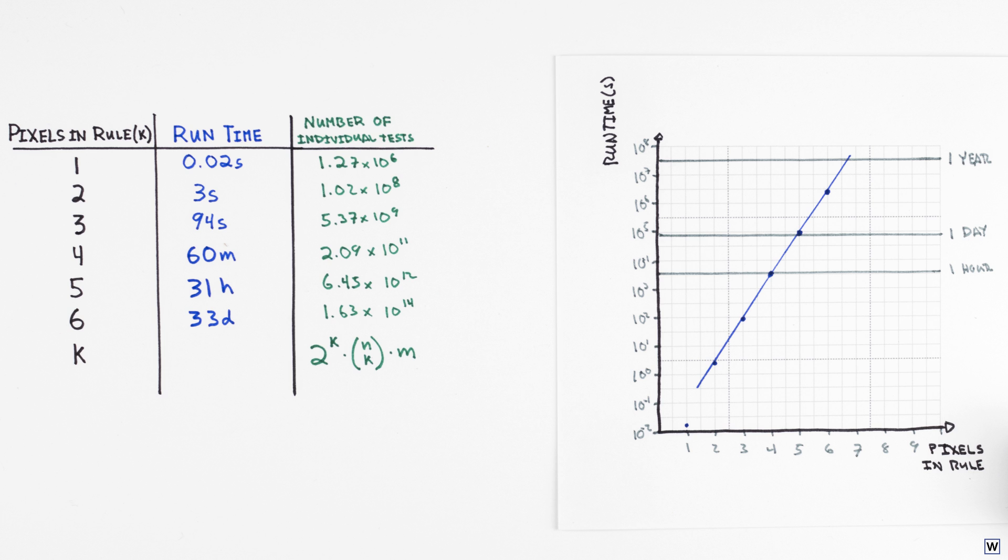Remember that the real issue here is how the number of rules we need to check grows with the number of pixels in our rule. Since we're checking every possible rule, the time required for our algorithm to run grows just as quickly as the number of possible rules.